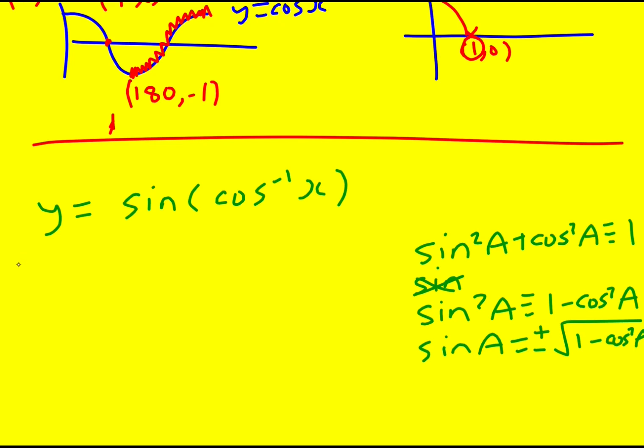So here we can apply that, and we're going to get y equals, and I can replace my sine by plus or minus the square root of one minus cos squared of cos to the minus one x. So that is okay to do. I've just replaced sine by its equivalent form, the square root, plus or minus the square root of one minus cos squared A.